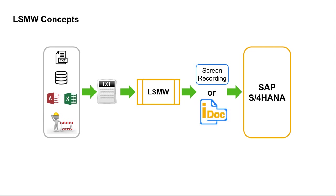So what's the target object? That's your first decision. LSMW provides several options for loading data, but I'll focus on the two options most used by functional resources: screen recording and IDocs. Screen recording, also known as batch input recording, is useful for simple and low-volume data migration or mass update requirements. Sometimes it's the choice because no standard IDoc exists for the business object you're trying to load or update. Either way, LSMW projects based on screen recording are easy to create, albeit with some limitations.